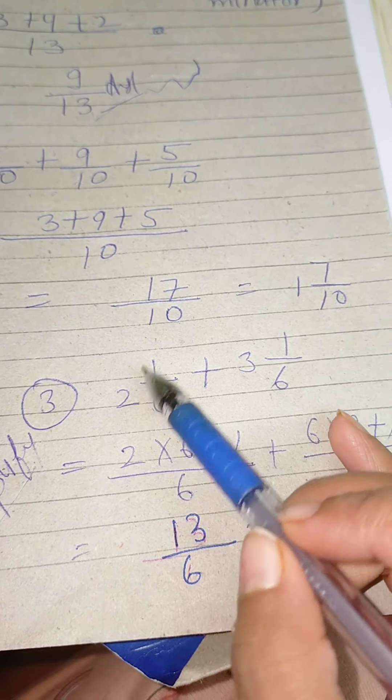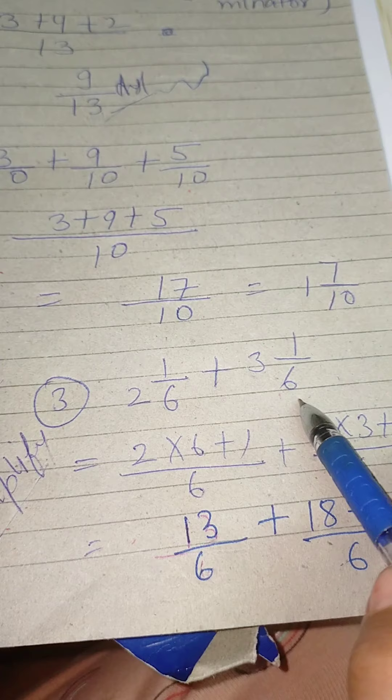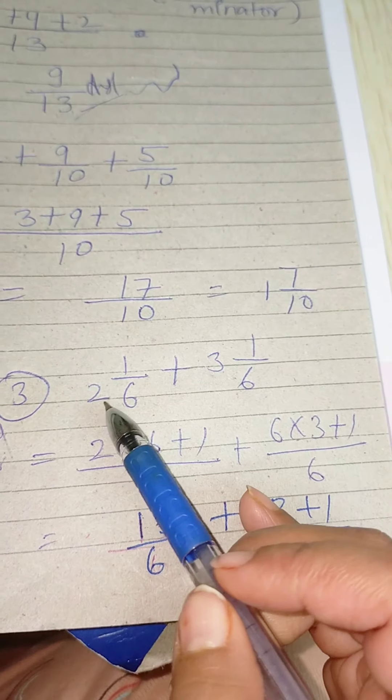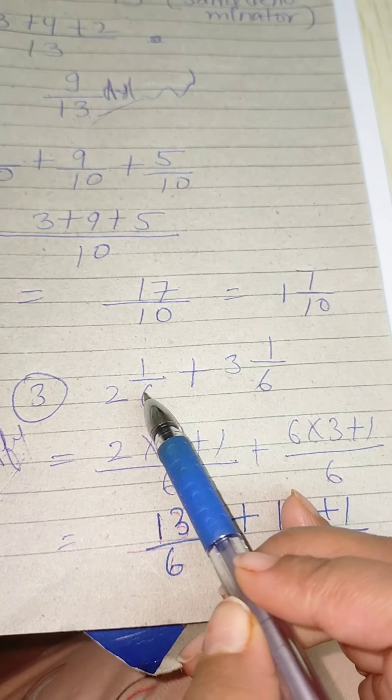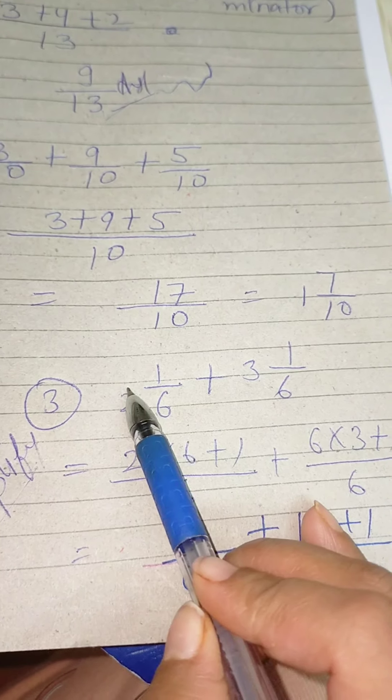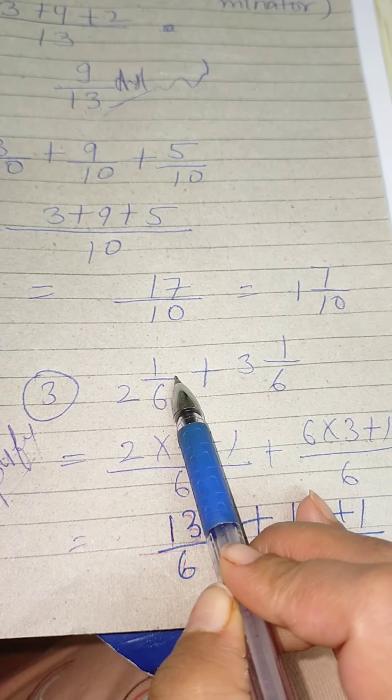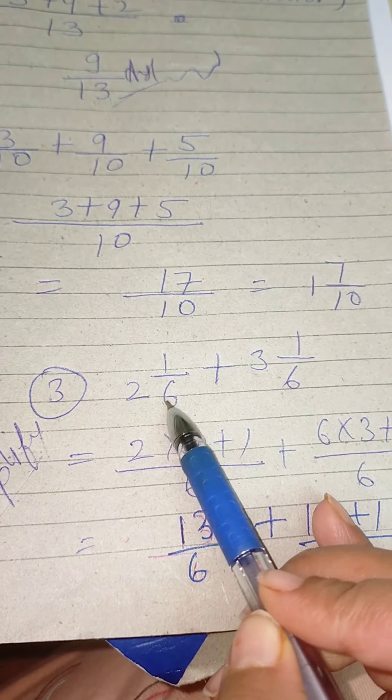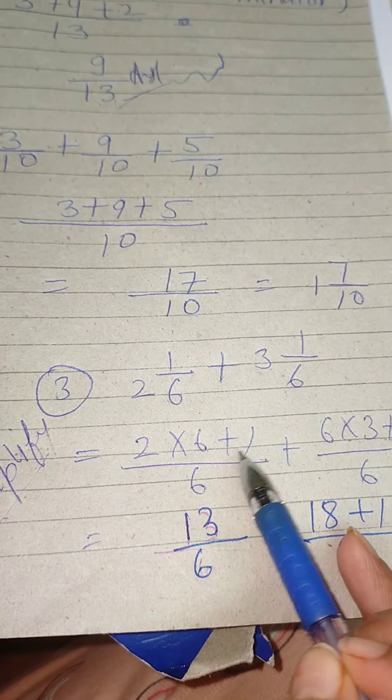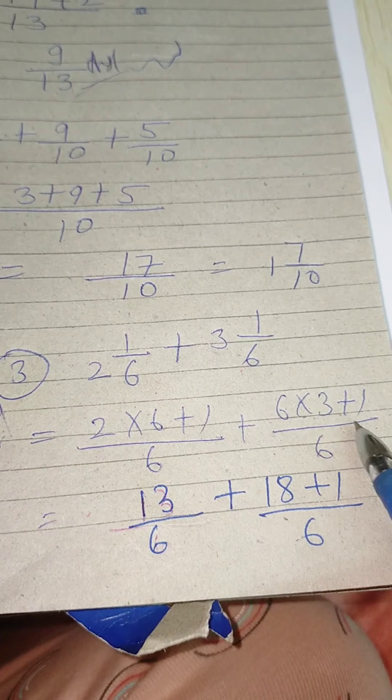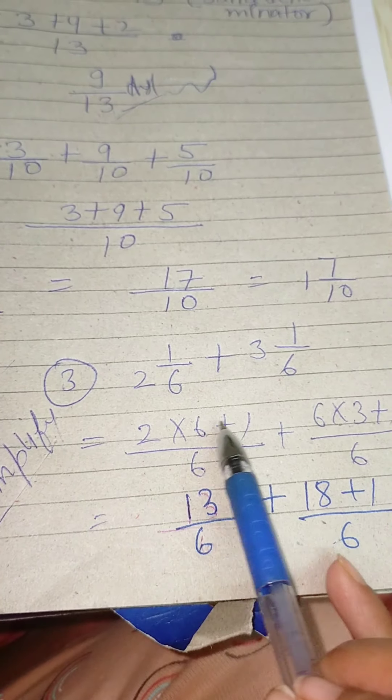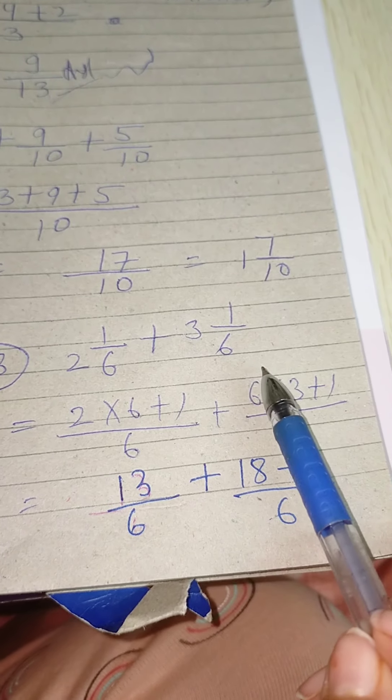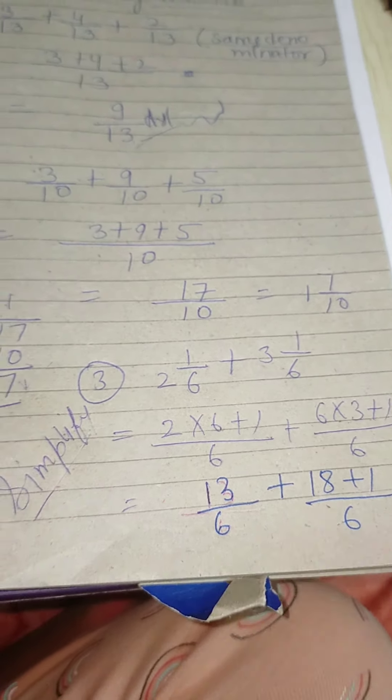2 and 1 by 6 plus 3 and 1 by 6. Now how will we solve this? 2 into 6 plus 1, over 6, plus 3 into 6 plus 1, over 6. Denominator stays the same at 6. 2 into 6 is 12 plus 1 equals 13. 3 into 6 is 18 plus 1 equals 19.